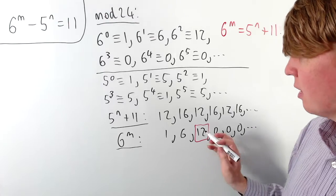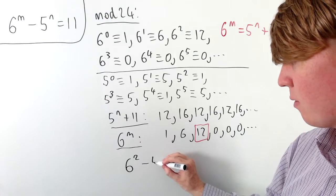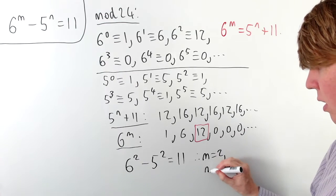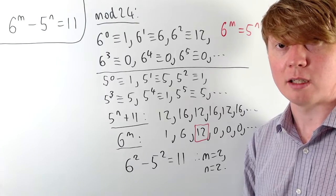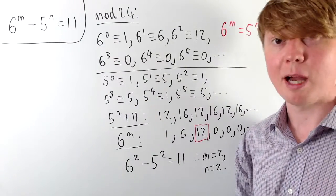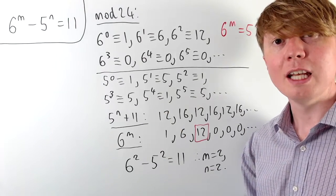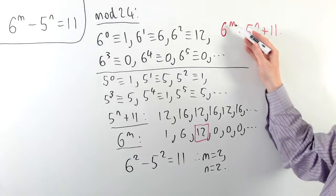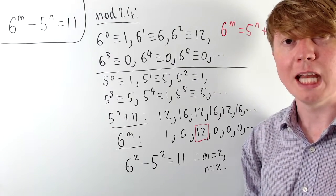We can check: 6 squared minus 5 squared equals 36 minus 25 equals 11. So m equals 2 and n equals 2 is the only solution. We can also rule out negative integers: if m is negative, 6 to the m minus 5 to any power is much smaller than 11. If n is negative, 5 to the n plus 11 would be between 11 and 12, and no integer power of 6 could satisfy that. So these are truly the only integer solutions.